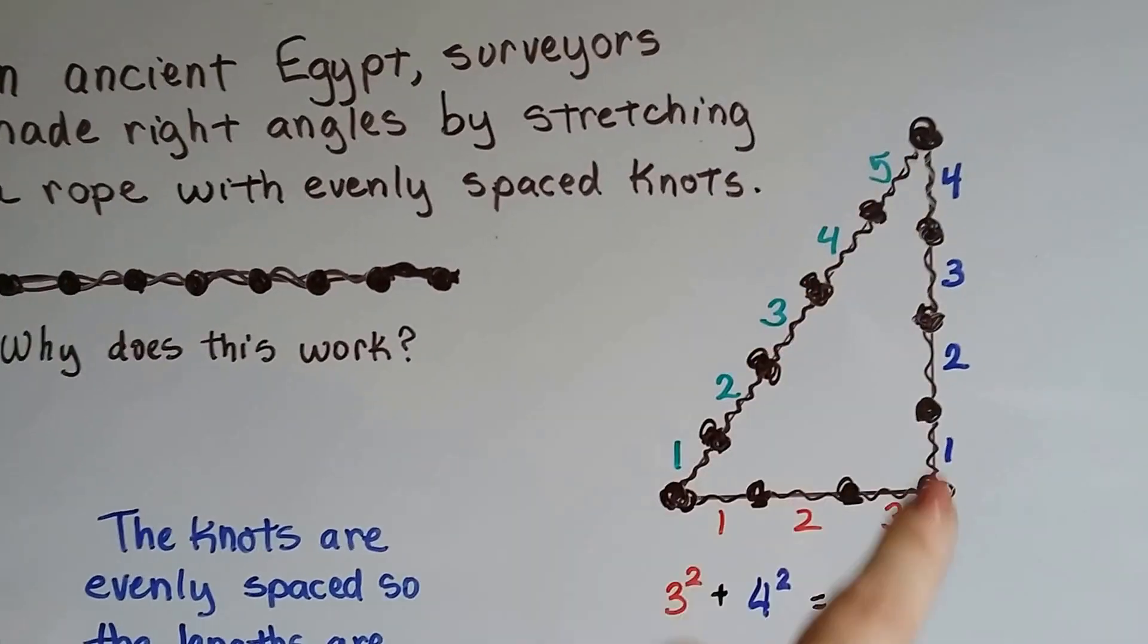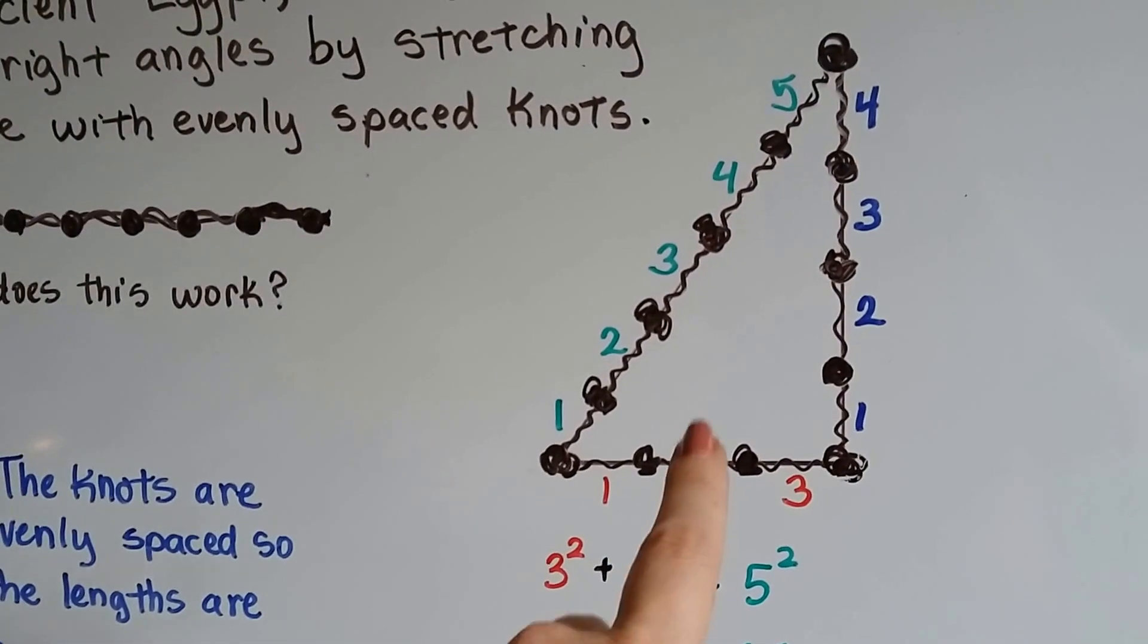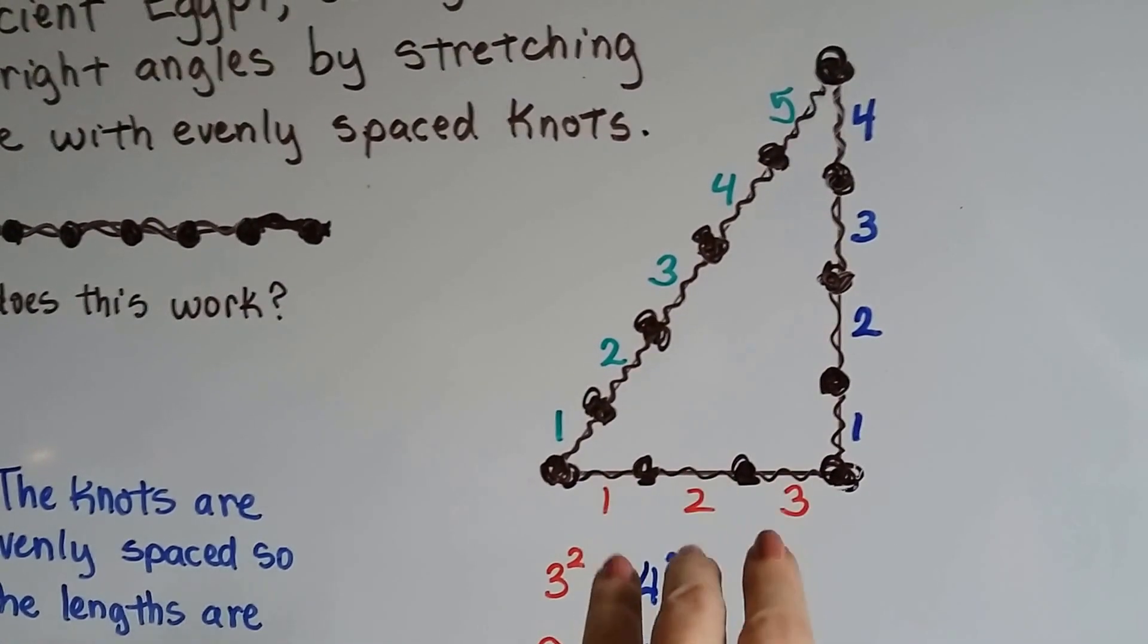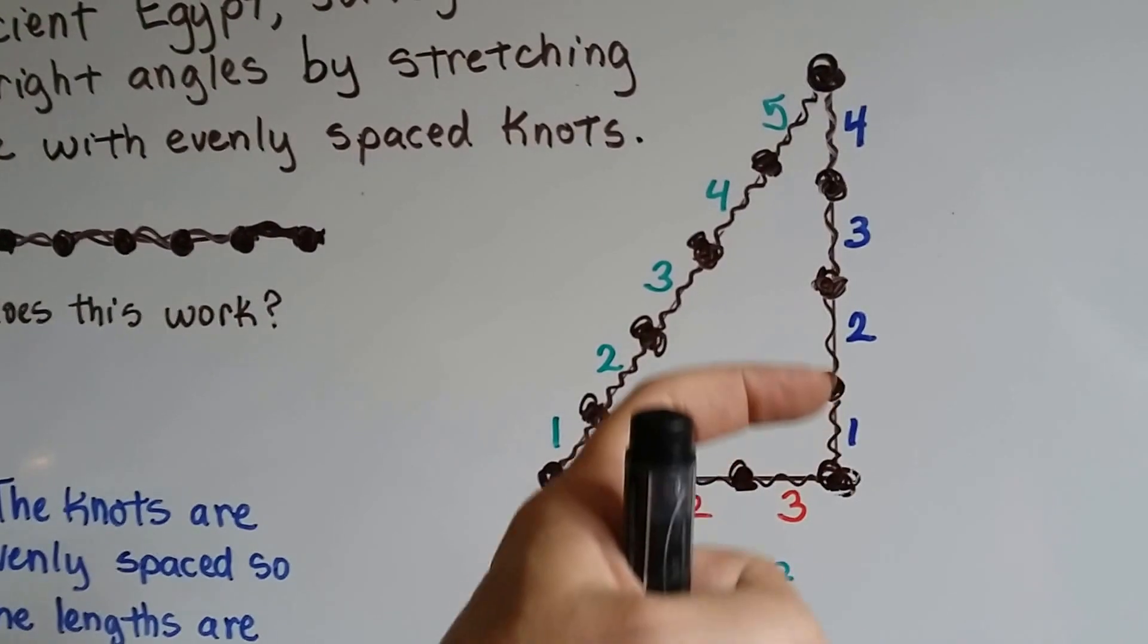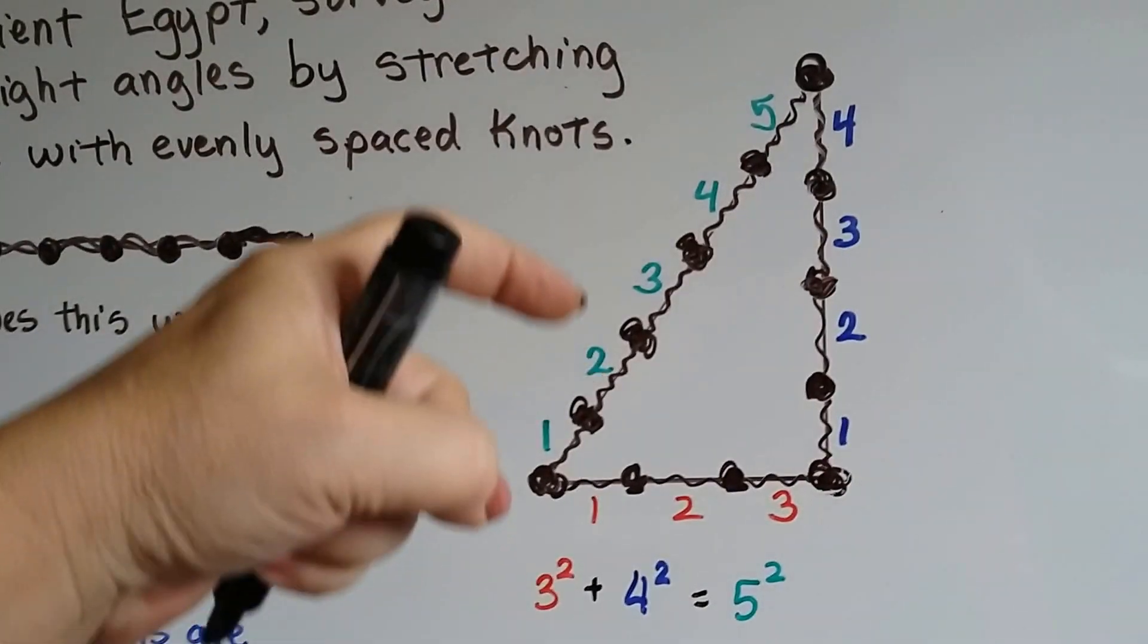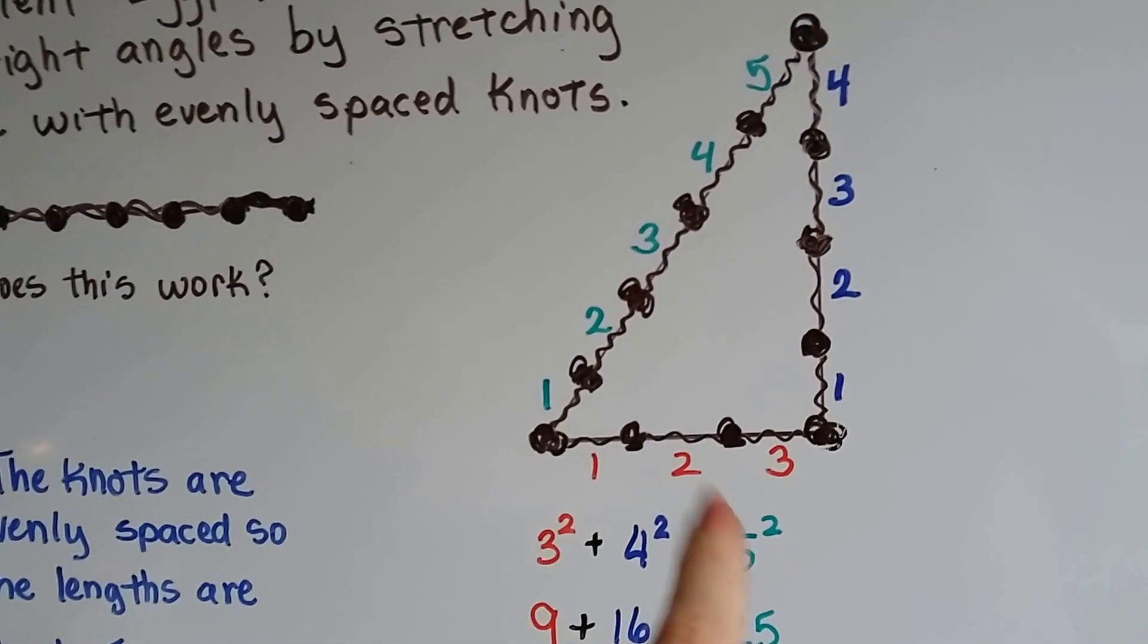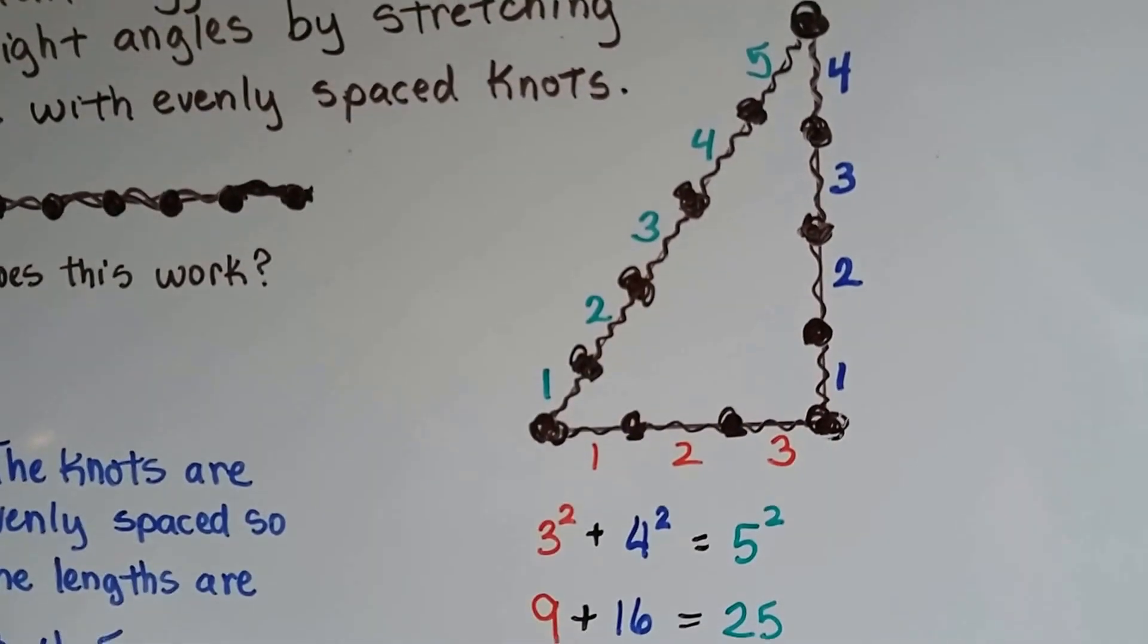If they put it into the shape of a triangle, you can see there's three spaces here, then there's four spaces there, and there's five spaces there. That gives us a 3, a 4, and a 5 for the sides.